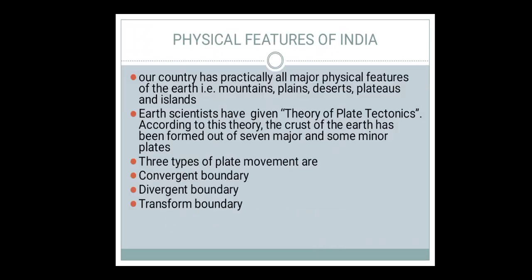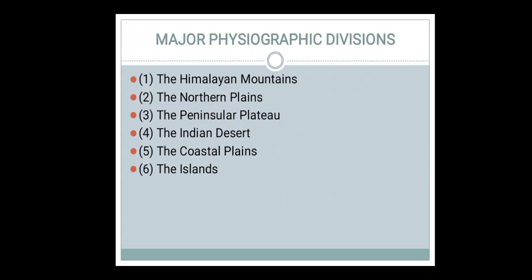India is such a rich country that it has all types of physical features. The physiographic divisions of India are: the Himalayan mountains, northern plains, peninsular plateau, Indian desert, coastal plains, and island groups.